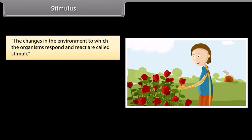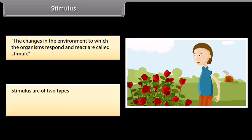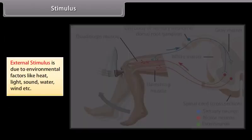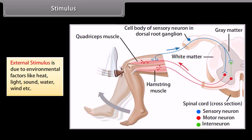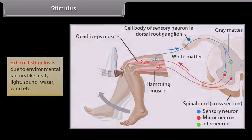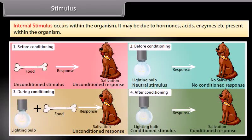The changes in the environment to which organisms respond and react are called stimuli. Stimuli are of two types: external stimulus and internal stimulus. External stimulus is due to environmental factors like heat, light, sound, water, wind, etc. Internal stimulus occurs within the organism and may be due to hormones, acids, enzymes, etc. present within the organism.